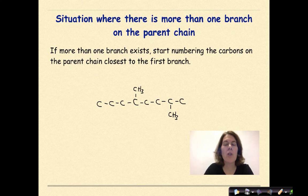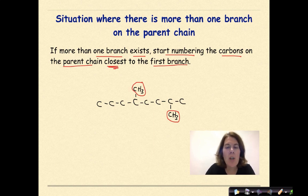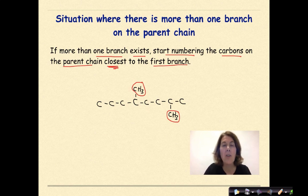Situation where there's more than one branch on a parent chain. If more than one branch exists, start numbering the carbons on the parent chain closest to the first branch. Okay, so a couple of things to note here. First, I have a couple of branches on my parent chain. I'm using a condensed structural formula for my branches just to keep things from getting out of control. Also, for my parent chain for this video, I am just highlighting the carbons. For the sake of simplicity and to keep it neat and focused and to be able to see the numbers, I am not including the hydrogens.